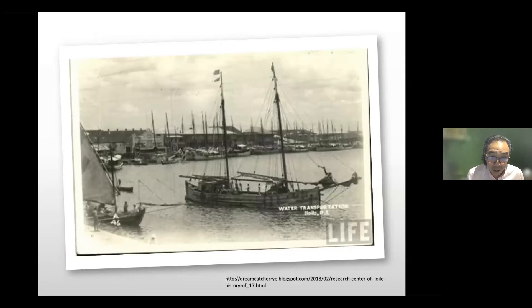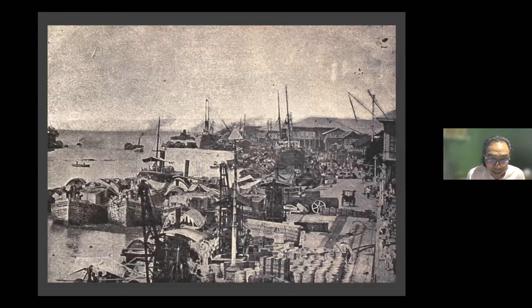Trade always produces an induced demand for shipping. This type of ship is called a Lorcha — its design combines a European hull with sails based on the Chinese sampan. It was used to transport sugar from Negros to the port of Iloilo, and this design was actually promoted by the British diplomat Nicholas Loney. Here you can see a scene at the port of Manila at the end of the 19th century, at the mouth of the Pasig River — cascos, small watercraft, and larger steamers all visible.